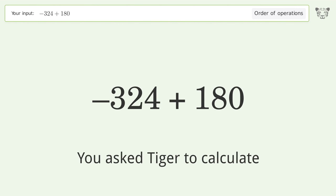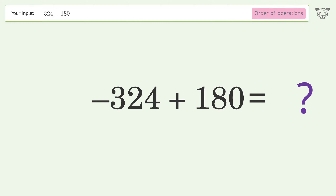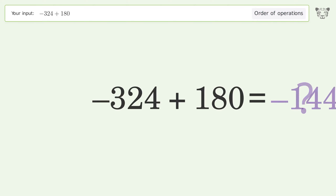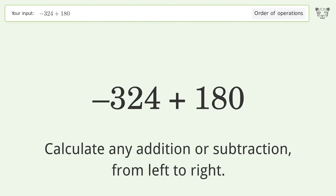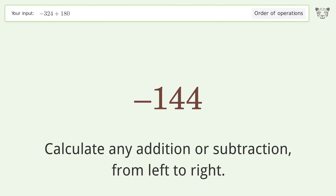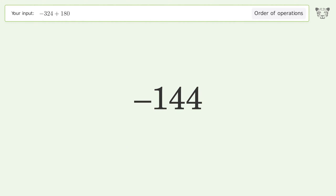You asked Tiger to calculate. This deals with the order of operations — the final result is negative 144. Let's solve it step by step. Calculate any addition or subtraction from left to right: negative 3 times 24 plus 180 equals negative 144. And so the final result is negative 144.